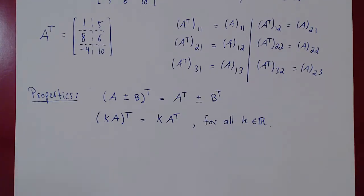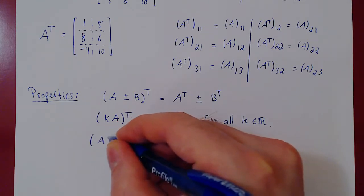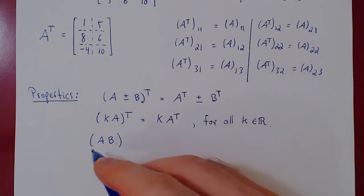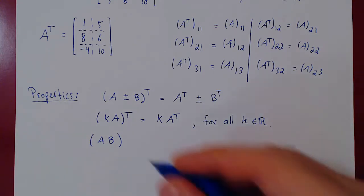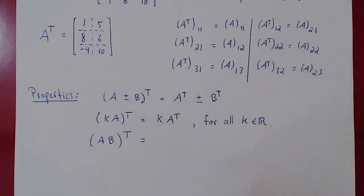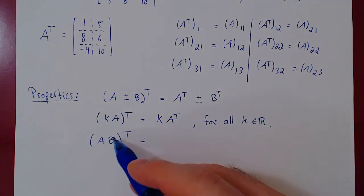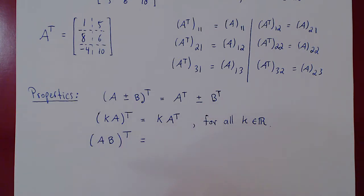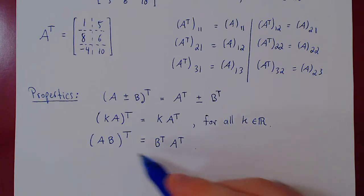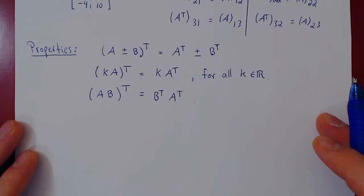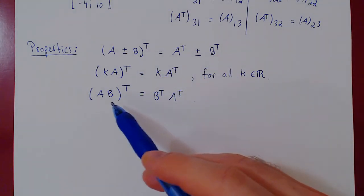Property two: if you take a scalar multiple of a matrix and transpose it, a real number is a 1 by 1 matrix and transposing it does nothing, so you get K times the transpose of A, for all real numbers K. Property three — the most subtle one: if A and B can be multiplied in the order AB, then the transpose of AB is not A transposed times B transposed, but rather B transposed times A transposed. You transpose each matrix but invert the order of the product.